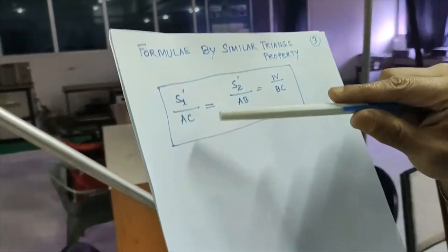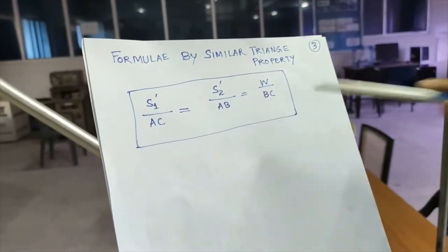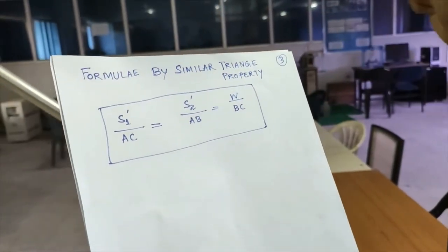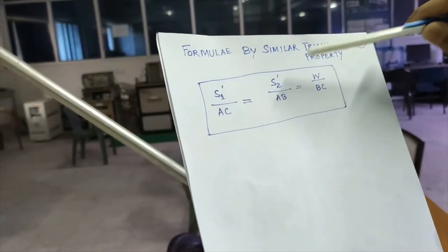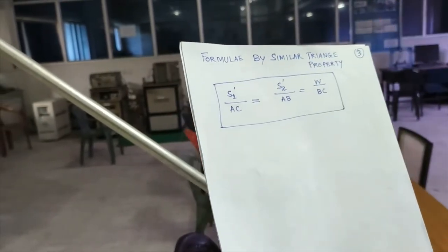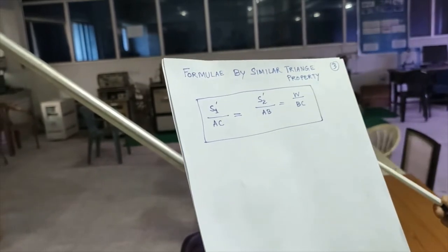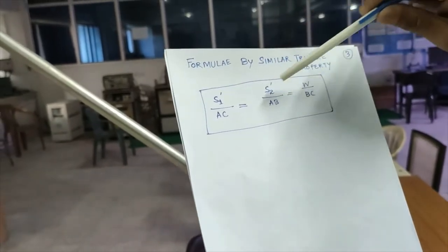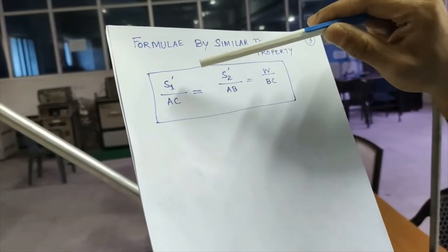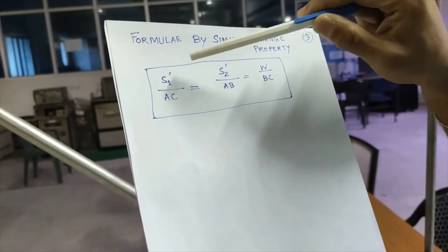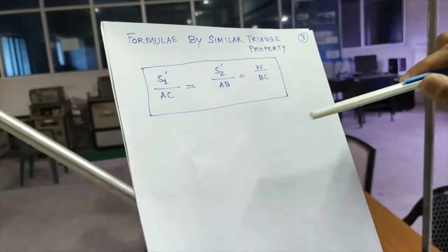The four parameters AC, AB, W and BC, they are known parameters. However, S1 dash and S2 dash are the unknown parameters which have to be determined. From this property, we will get two system of equations and so easily these two variables, S1 dash and S2 dash, can be determined.